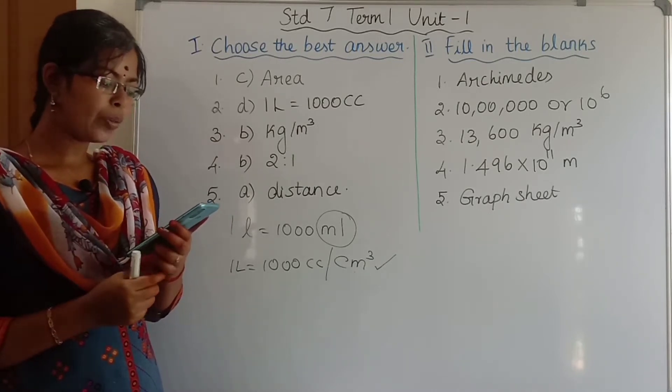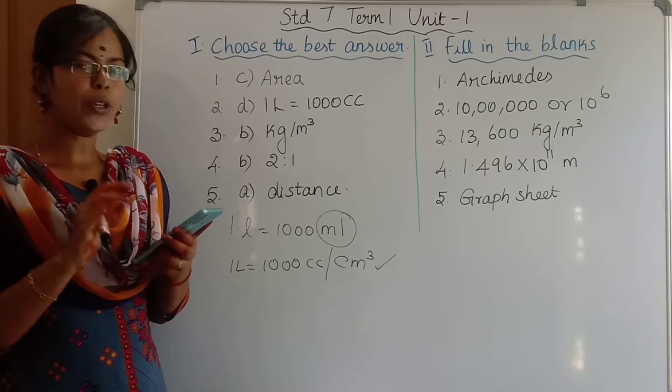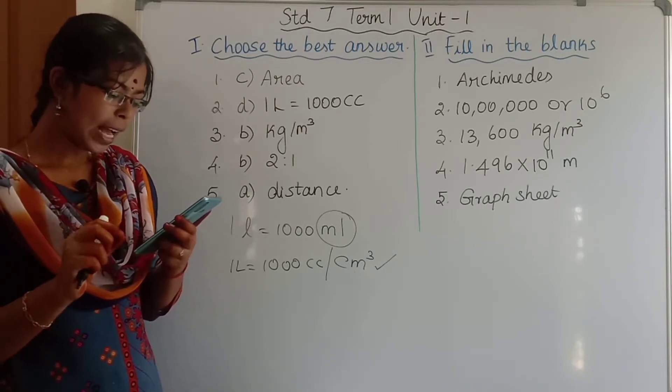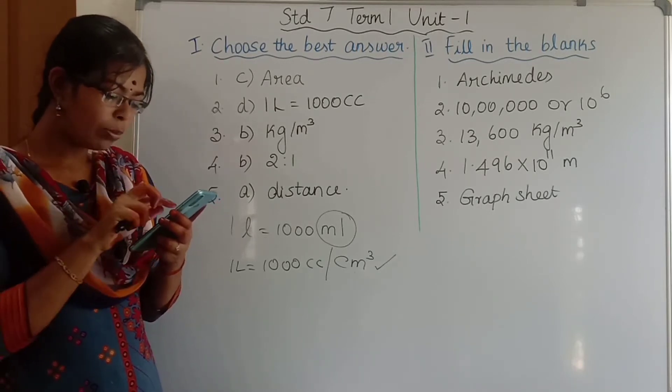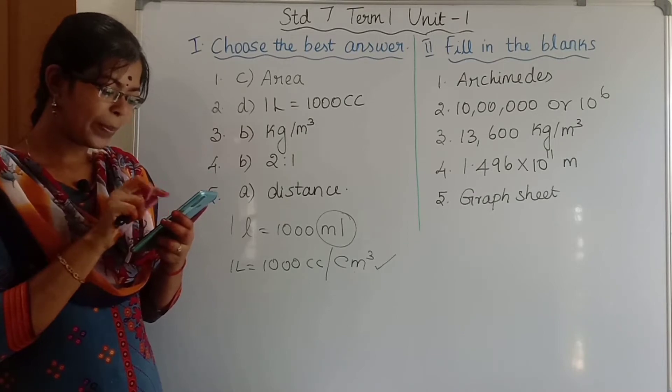Third question: the SI unit of density is kilogram per metre cube. The answer is Option B.